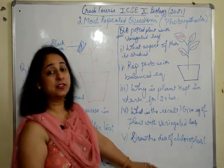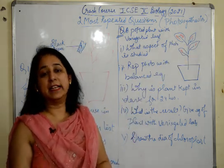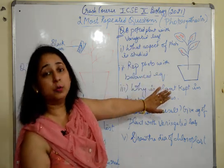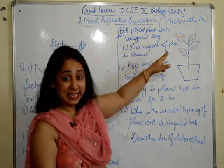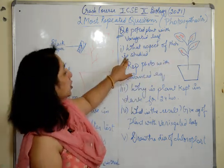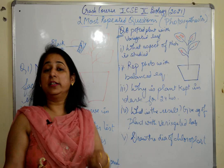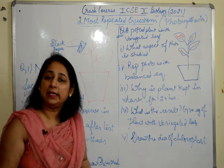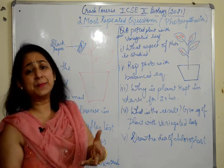The second question involves a variegated leaf — you can see the patches on it. This is a question from the 2018 board paper, and the other from 2019. A potted plant with a variegated leaf was taken and kept in dark for 24 hours. When a variegated leaf is mentioned, it is automatically understood that they are going to prove that chlorophyll is necessary for photosynthesis.